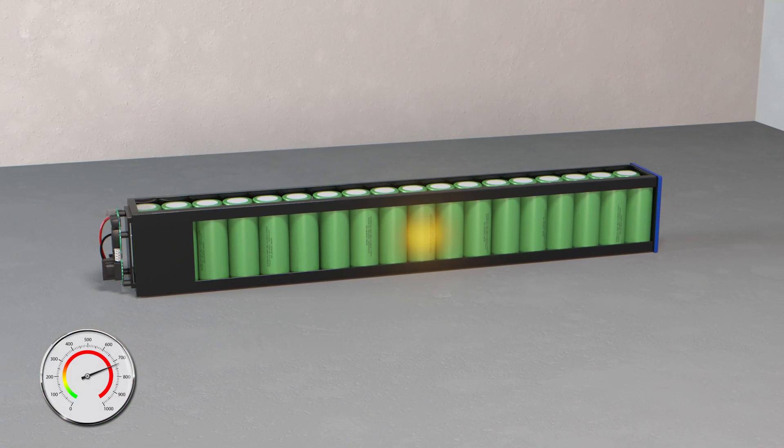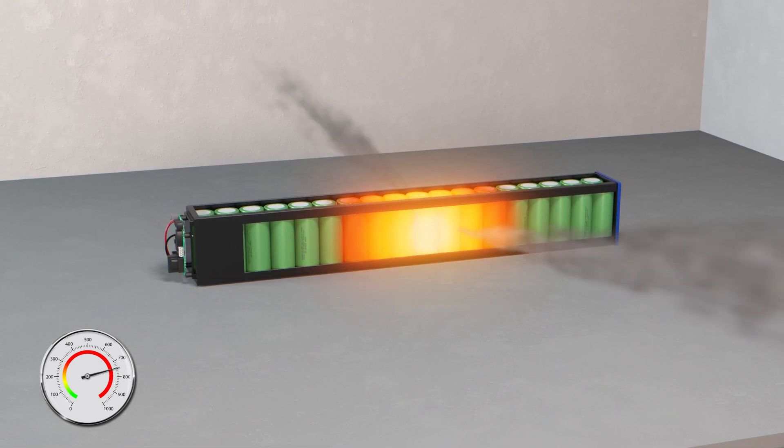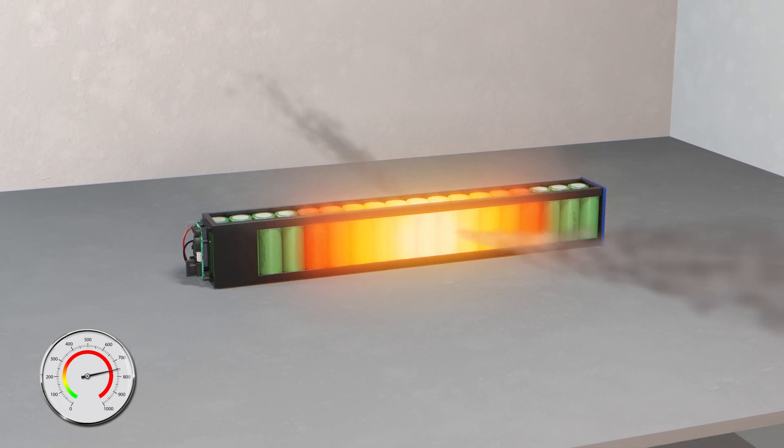The rise in temperature in a single cell will begin to affect cells in close proximity, creating a domino effect. Thermal runaway is now spreading to the other cells.